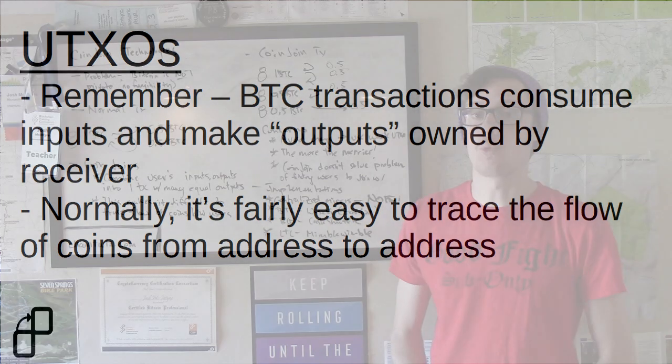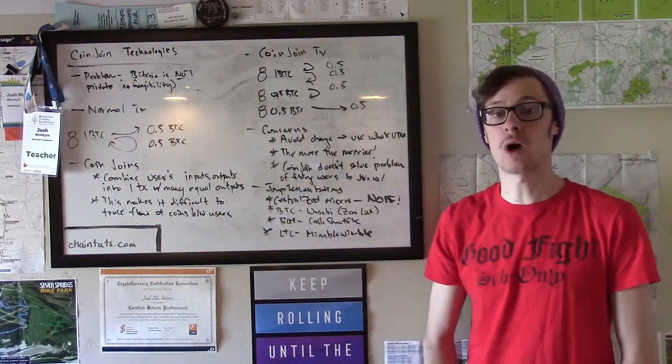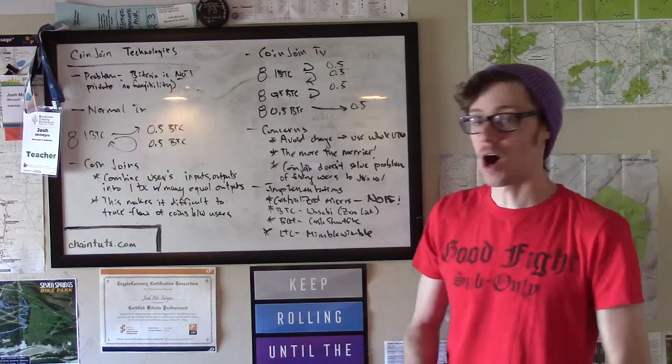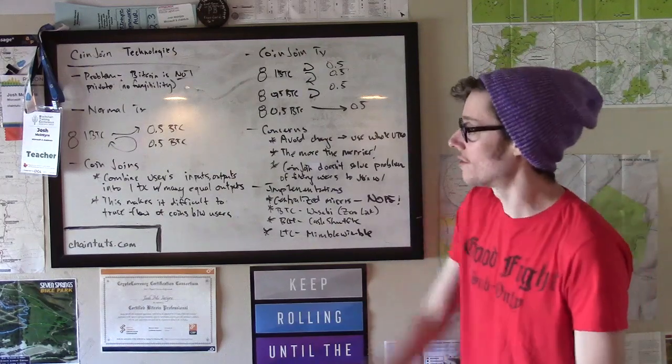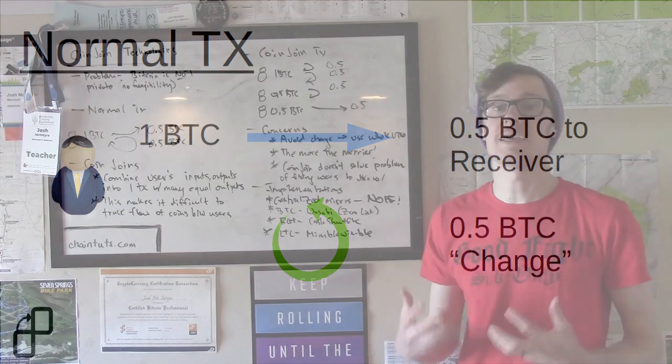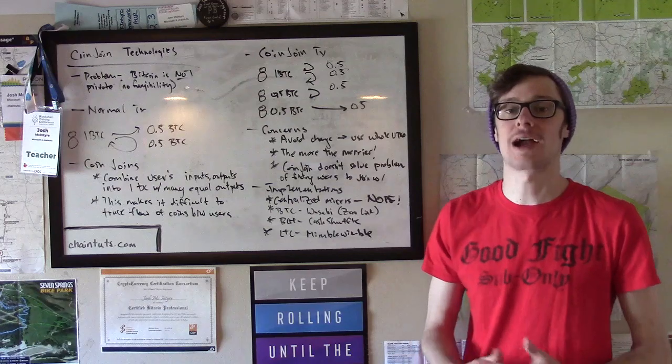Let's say Bob has a one Bitcoin UTXO in his wallet and wants to send 0.5 Bitcoin to another user. In a normal transaction, Bob would create a transaction that sends a new 0.5 Bitcoin output to the receiving address and another 0.5 Bitcoin UTXO back to his wallet as change. This example omits minor fees, but that also occurs. With these transactions done from one user's wallet to other users' wallets, it's very easy for chain analysis to track the flow of coins.